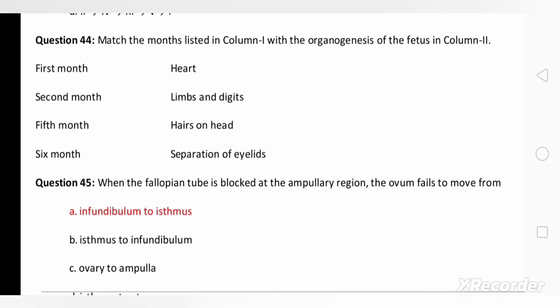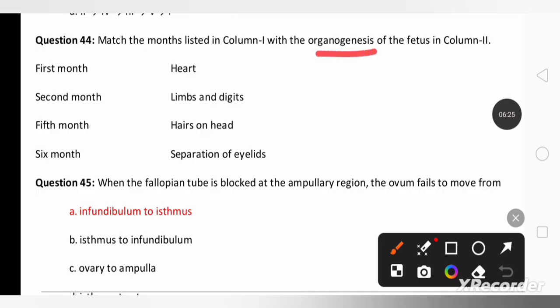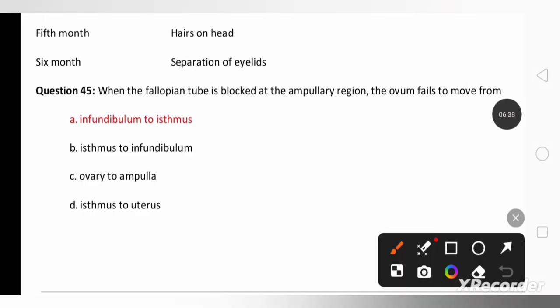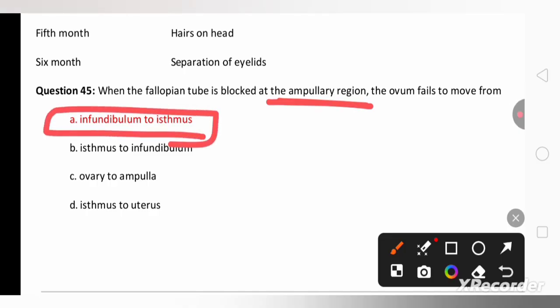Next question is matching column one with organogenesis of the fetus with column two. In the first month there is a development of heart, second month limbs and digits, fourth-fifth month hairs on the head, six months separation of the eyelids. When the fallopian tube is blocked at the ampullary region the ovum fails to move from the infundibulum to isthmus.